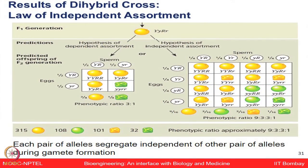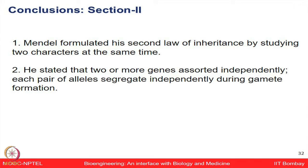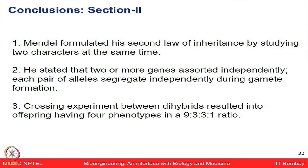Each pair of alleles segregates independently of other pairs during gamete formation. We conclude that Mendel's second law of inheritance was observed by studying two characteristics simultaneously. He stated that two or more genes can be sorted independently, and each pair of alleles segregates independently during gamete formation. After crossing, he observed the 9:3:3:1 ratio.